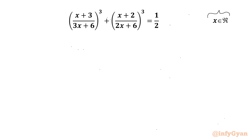Let us get started by writing our denominators cannot be 0. So 3x plus 6 cannot be 0, which means x cannot be equal to minus 2. And 2x plus 6 cannot be 0, so x cannot be minus 3.